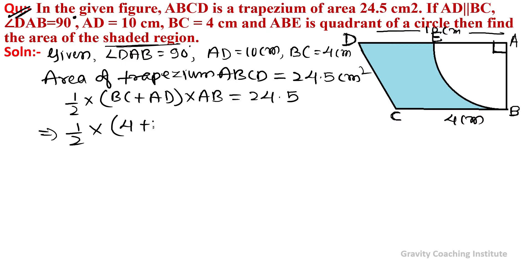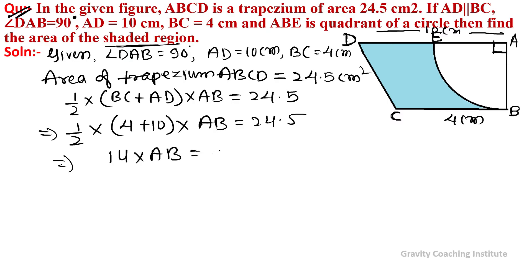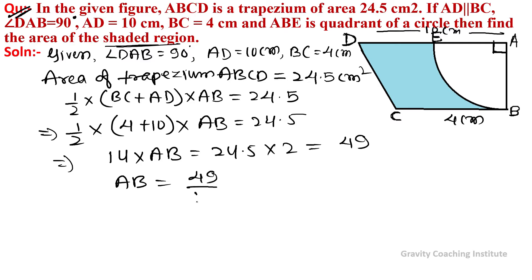So: (4 + 10) into AB equals 24.5, which implies 14 into AB equals 24.5 into 2, which equals 49. Therefore AB equals 49 upon 14, and since 7 times 7 is 49, AB equals 7 upon 2 centimeters.